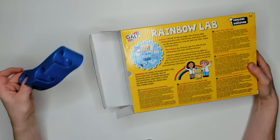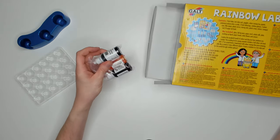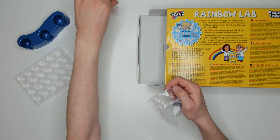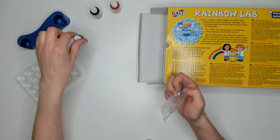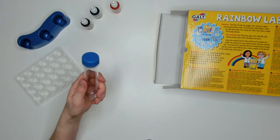Inside the box we have the test tube rack, a color mixing tray, three food colors, blue, yellow and red, three test tubes.